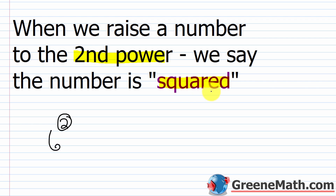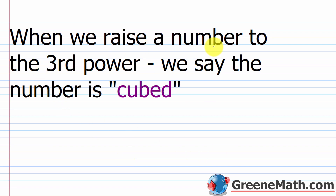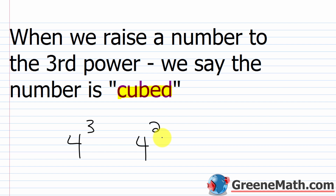When we raise a number to the third power, we say the number is cubed. So that means you have an exponent of 3 — write this down, it comes up a lot. If I have 4 to the third power, we generally say '4 cubed.' You're not wrong if you say '4 to the third power,' but you need to know both in case your teacher asks. When someone says something is cubed, it means raised to the third power; when something is squared, it means raised to the second power.